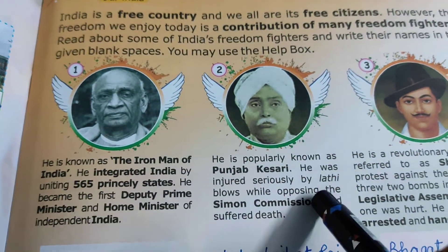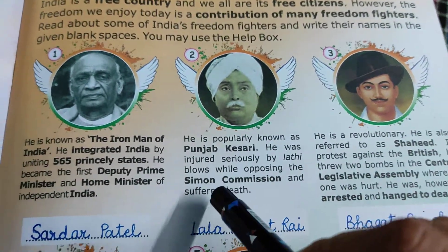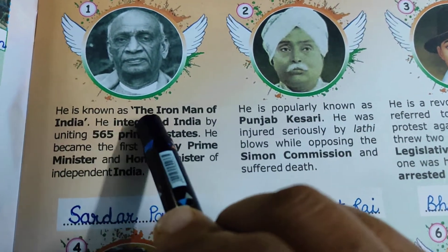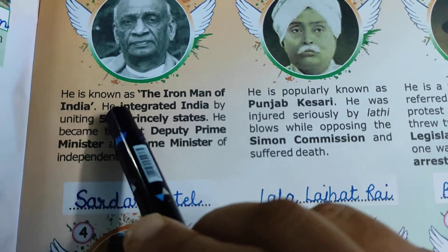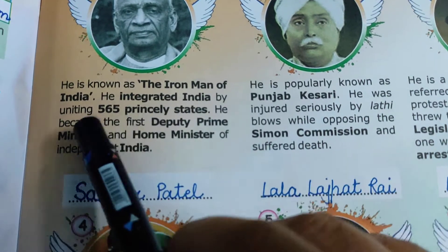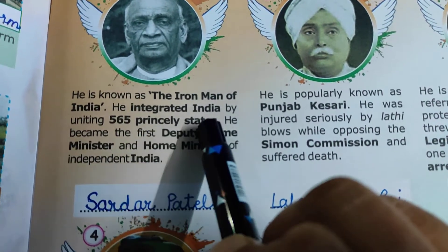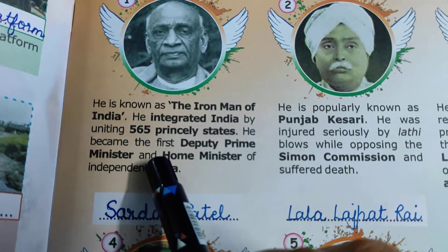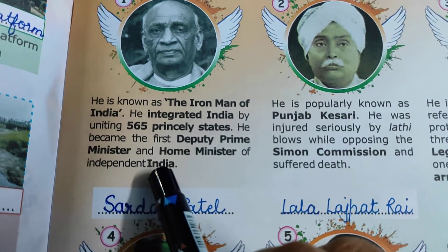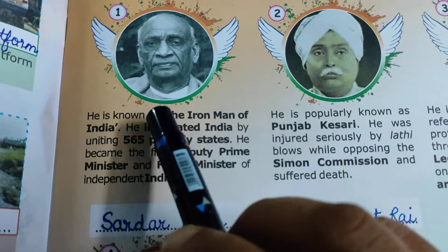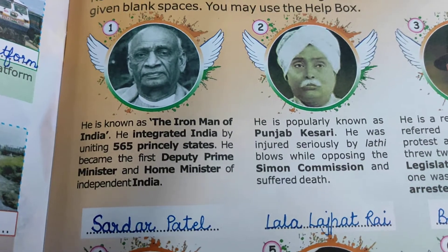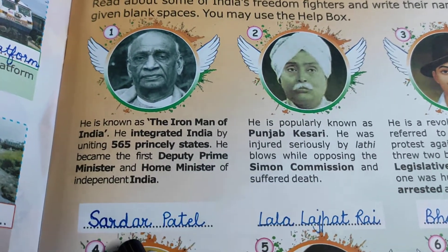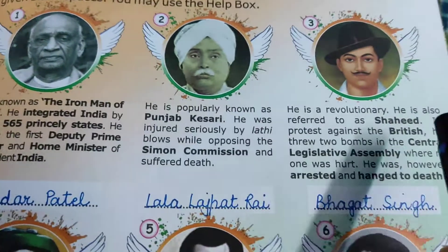Some descriptions are given about the freedom fighters and we have to identify their picture as well as the description and write their names. The first one is known as the Iron Man of India. He integrated India by uniting 565 princely states. He became the first Deputy Prime Minister and Home Minister of Independent India. The name of this great freedom fighter is Sardar Patel.